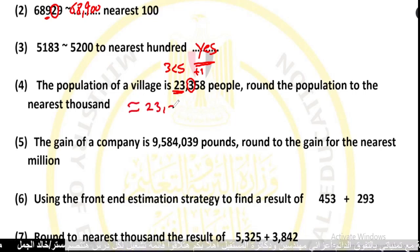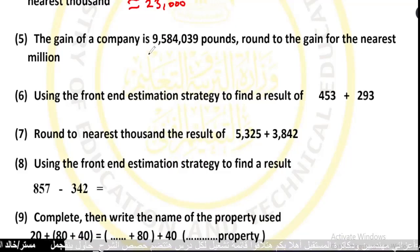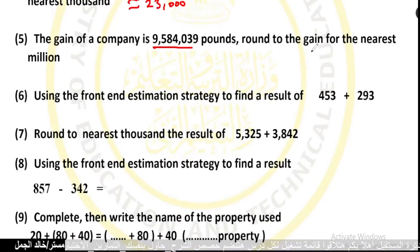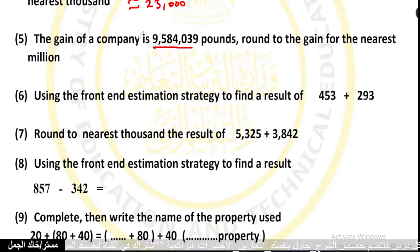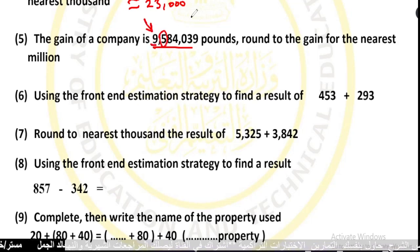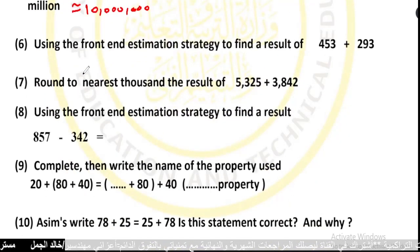Number 5: the gain of a company is 9,500,000 pounds. Round the gain to the nearest million. The million place digit is 9. We look at the next digit: 5 equals 5, so I will add 1. 9 plus 1 equals 10 million. The gain rounded to the nearest million is 10 million.